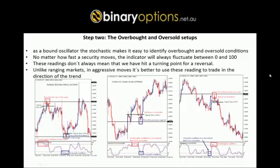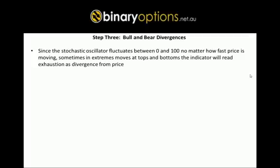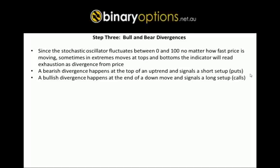Now let's go to the second setup: divergences. Being an oscillator, we will have bullish and bearish divergences. Since the stochastic fluctuates between 0 and 100, in extreme moves at the tops or bottoms the indicator will read exhaustion as divergence from price. A bearish divergence happens at the top of an upturn and signals a short setup to buy puts, and a bullish divergence happens at the end of a down move and signals a long setup to buy calls.